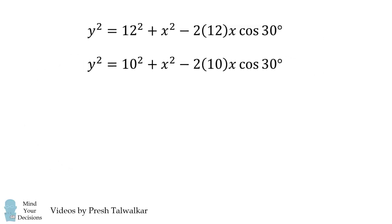We now have a system of two equations. We'll subtract the second equation from the first. The y squared terms will cancel out and x squared terms will cancel out. So we're left with 0 is equal to 12 squared minus 10 squared.